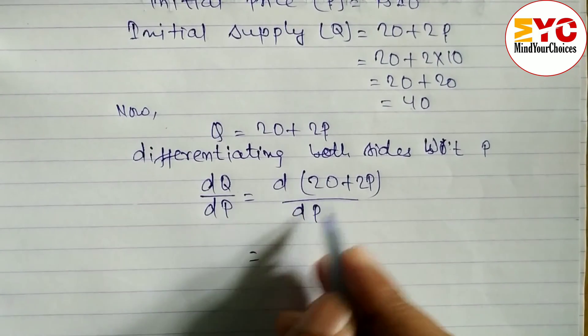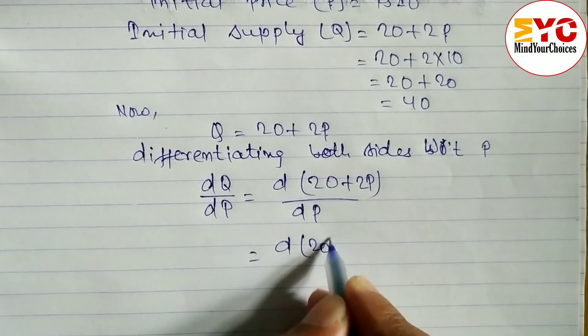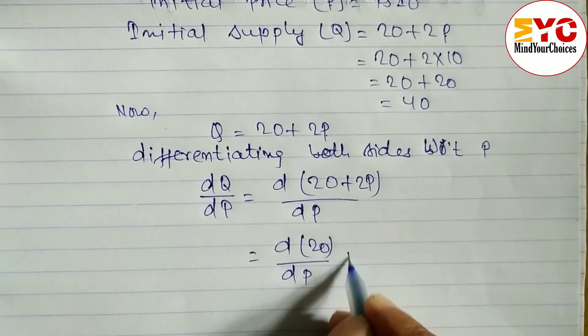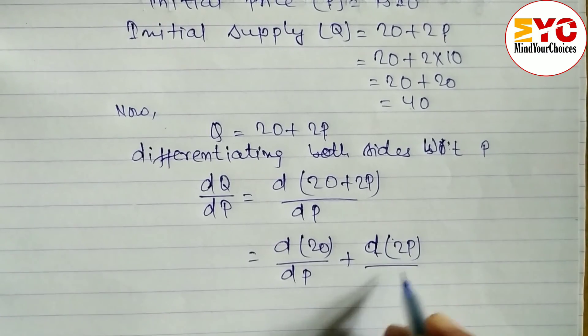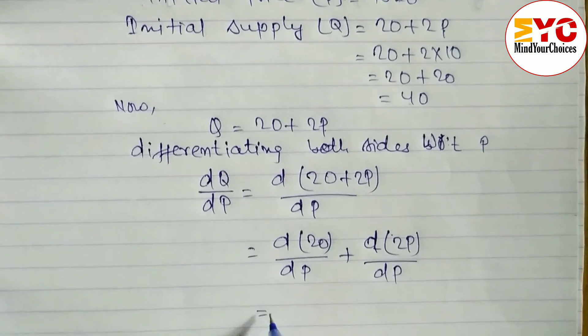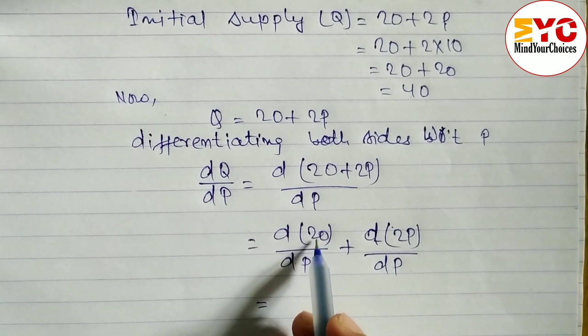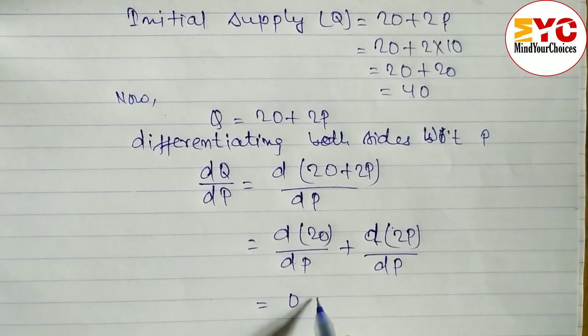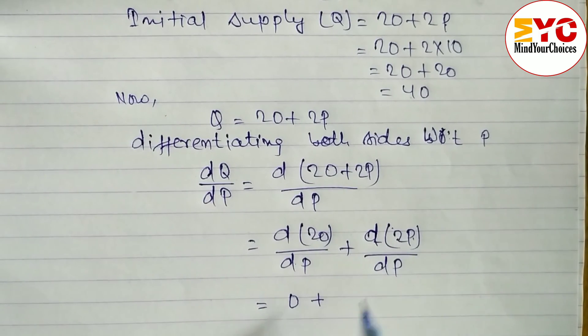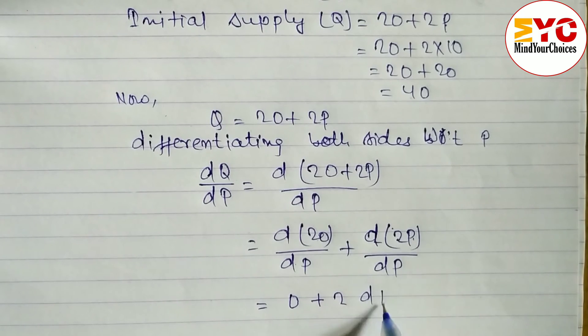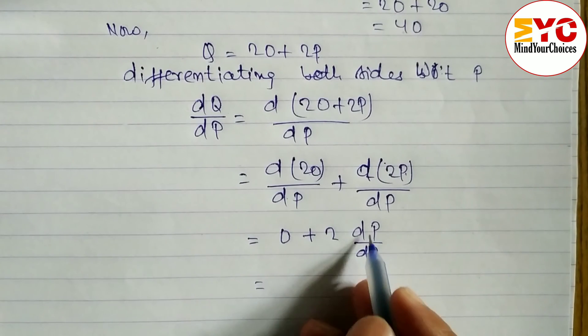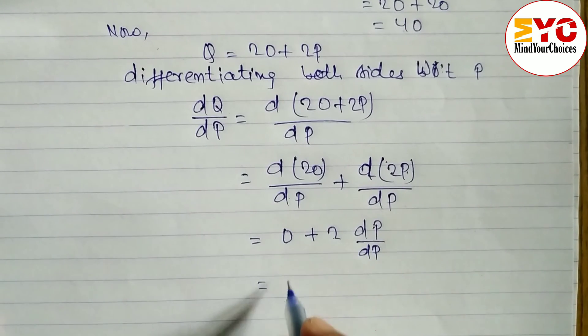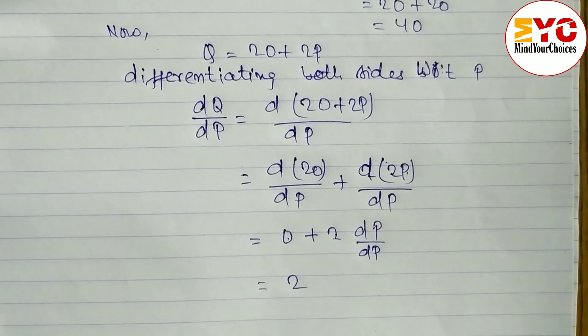After that we have to separate this: d(20)/dP + d(2P)/dP. Differentiation of any constant number will be zero, plus here 2P, so we have to write 2 in front and the remaining is dP/dP, which equals dP/dP cancel, remaining 1. 1 × 2 means 2, 0 + 2 means directly we can write 2.